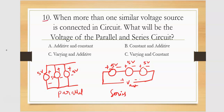So the 10th question: when more than one similar voltage source is connected in a circuit, what will be the voltage of the parallel and series circuit? In a series circuit with more than one voltage source — for example, 9 volts, 5 volts, 3 volts batteries — in parallel with a similar voltage source, plus minus plus minus, the output voltage remains constant. Because in parallel the voltage remains the same. This is the most important fundamental: in a parallel circuit, voltage is constant.